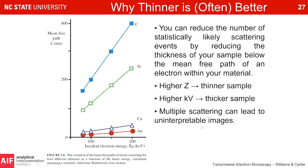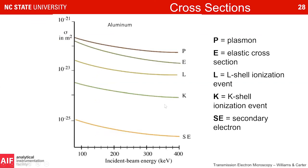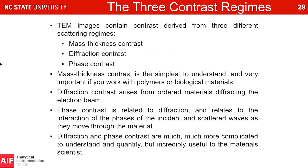One advantage of a two-million-volt microscope is going through thicker samples while maintaining high resolution, but you essentially need to build a new building for your microscope. Cross-section magnitudes for aluminum — things like plasmons, elastically scattered electrons, ionization events that generate x-rays from L or K shells, and secondary electrons — these are in different ranges. Calculating these cross sections is where things get more complicated, which is why we generally skip it in a basic introduction.